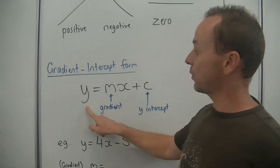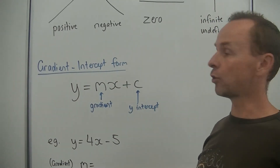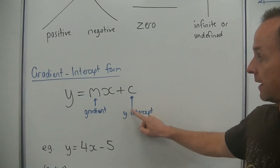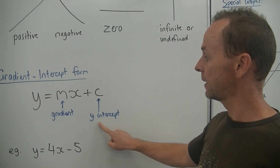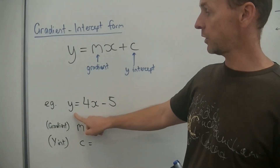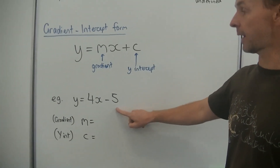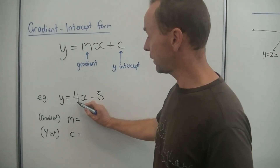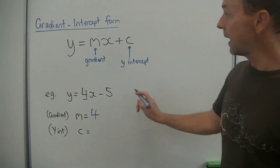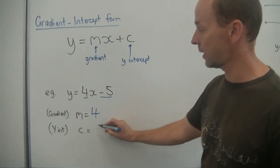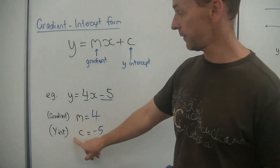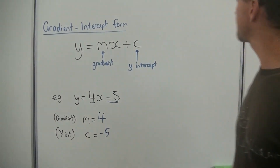A bit more revision. When we have an equation in the gradient-intercept form: y equals mx plus c. So m stands for the gradient, and c is the y-intercept. So that's another thing you've got to remember — c is the symbol for the y-intercept. So an example: if we have the equation y equals 4x minus 5, the gradient is in front of the x, so the gradient is equal to 4. And the y-intercept is not 5 — it is negative 5. Don't forget that minus sign. So the y-intercept is negative 5, and the symbol is c.